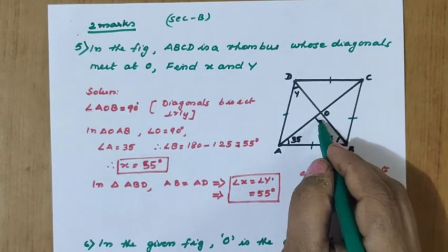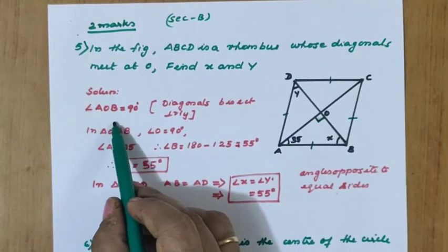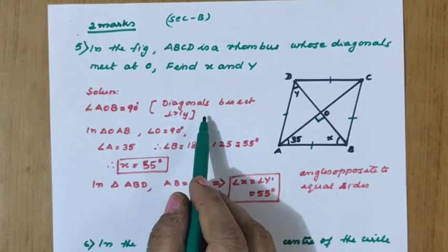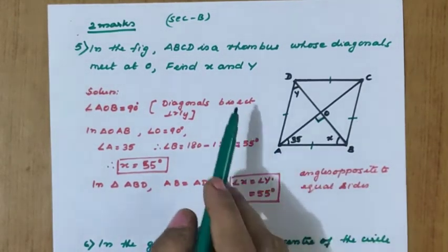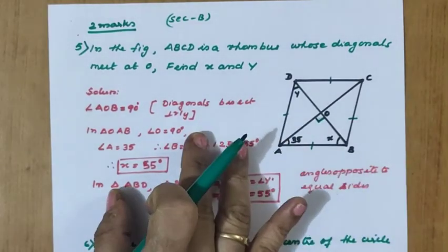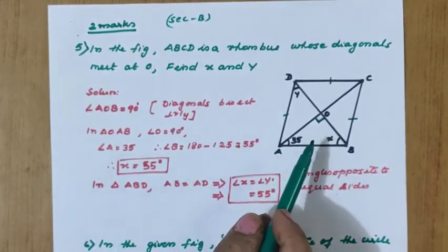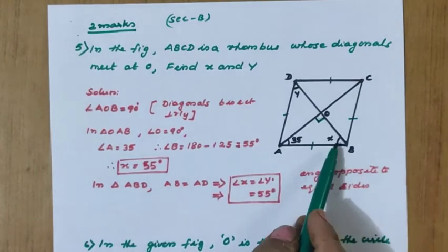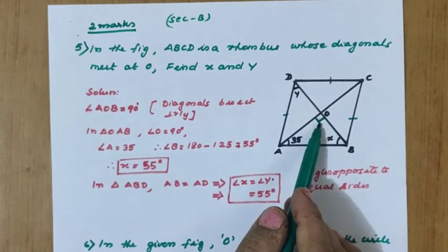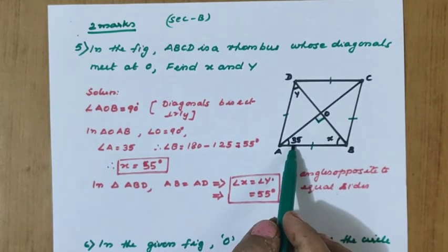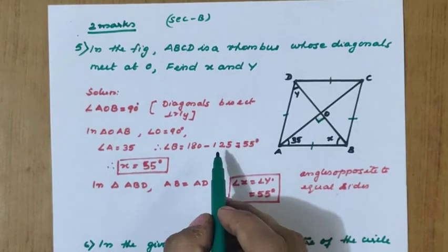We know the property that diagonals bisect each other at 90 degrees. So we write angle AOB equal to 90 degrees. The property of the rhombus is that diagonals bisect each other perpendicularly. Since it is a two-marker, there is no need to write given and to prove. In triangle OAB, angle O is 90 degrees and angle A is 35 degrees given. So we can calculate X by angle sum property. X equal to 55 degrees.